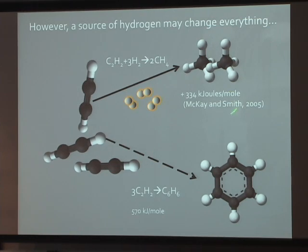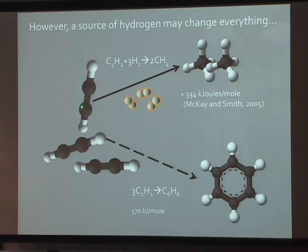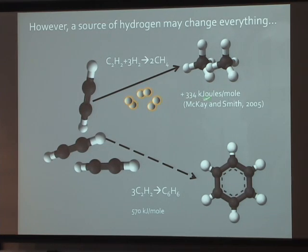What McKay and Smith speculated in 2005 was that if there were sources of hydrogen in the crust, or even scavenged from the atmosphere, some kind of chemistry — primitive biology, call it whatever you will — might actually convert the acetylene back to methane. These would essentially be methanogens, the equivalent of methanogens. The energy of conversion is more than enough to sustain methanogens — terrestrial methanogenic organisms — although they would not be obviously relevant to the hydrocarbon lakes.